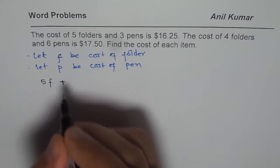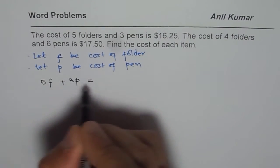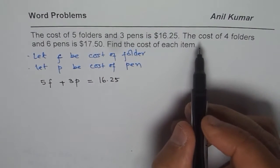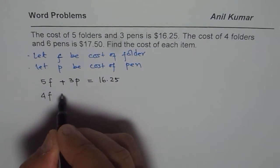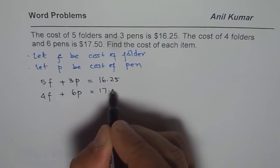Plus 3 pens means 3 times P. When you add them, you should get $16.25. The second statement is cost of 4 folders and 6 pens. That means 4 times F plus 6 pens equals $17.50.